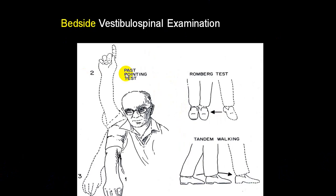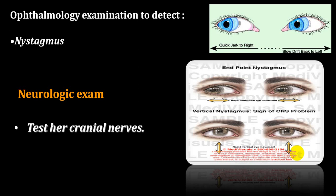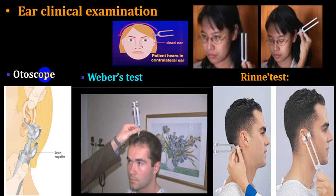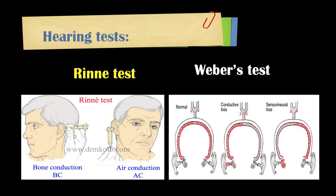Additional tests include finger-nose test, fistula test, head impulse test, Romberg test, past-pointing test, Unterberger stepping test, Romberg gait test, Dix-Hallpike maneuver, tandem walking, Fukuda test, nystagmography, and otoscope examination. Weber's and Rinne's tests help differentiate between conductive deafness and sensorineural deafness.